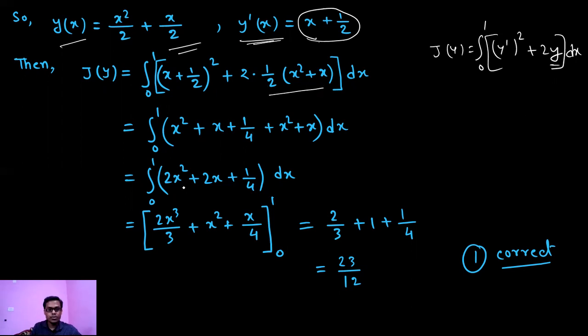Now simplifying this, we are getting integration 0 to 1, 2x² plus 2x plus 1/4 dx.